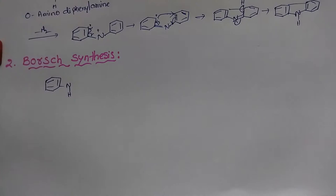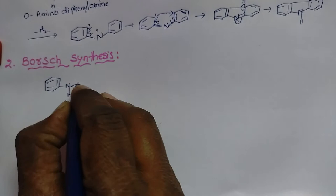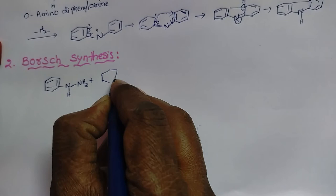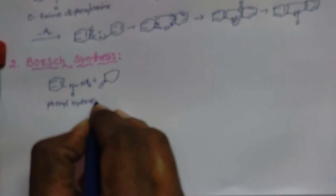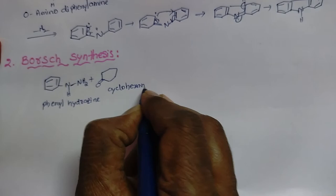Now we discuss the Borsche synthesis. In this method we use phenylhydrazine and cyclohexanone as the starting materials.